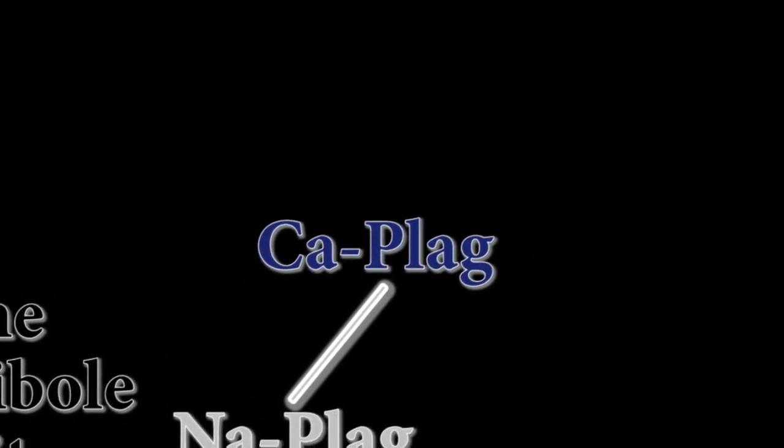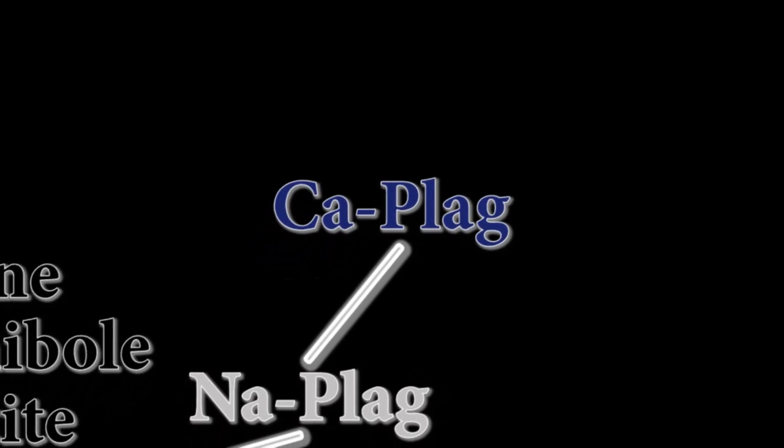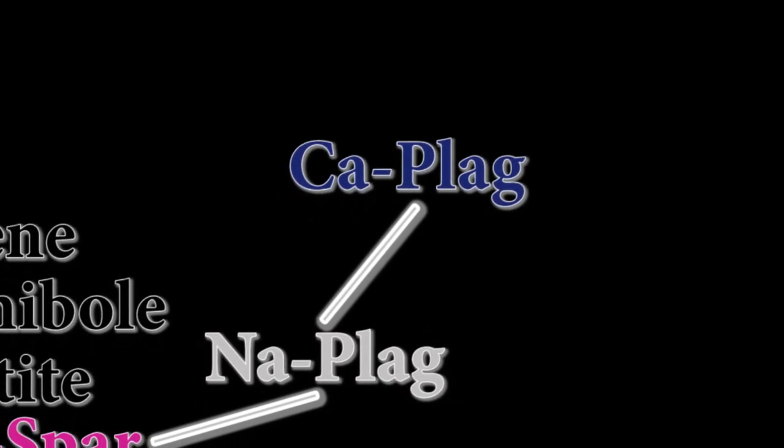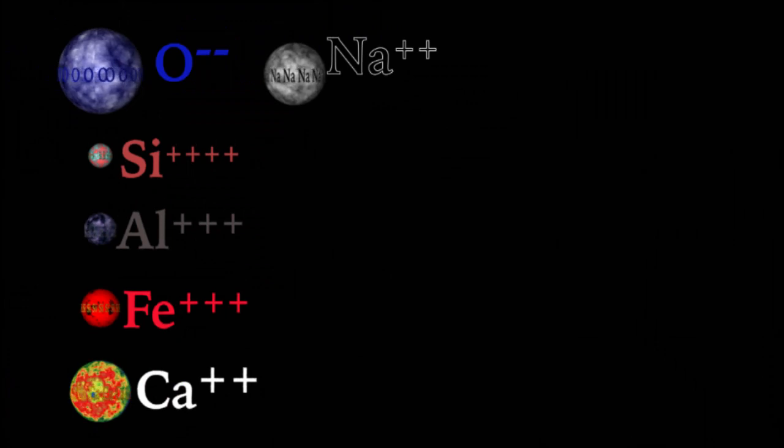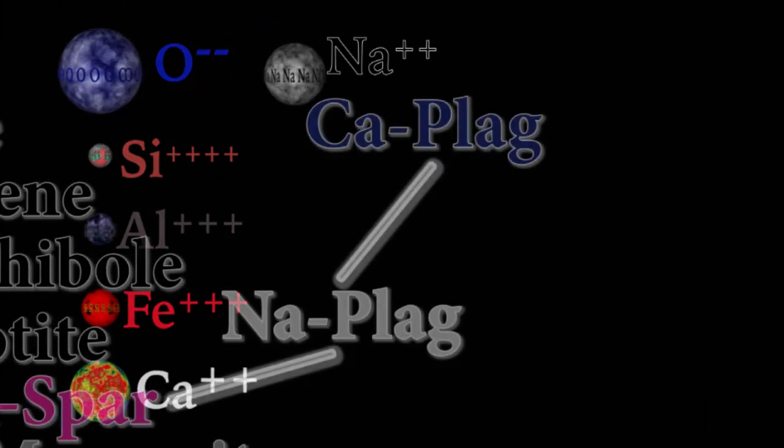The right side of this chart is called the continuous series, and describes a solid solution for plagioclase feldspar going from calcium rich to sodium rich. Calcium and sodium have similar ionic charge and radius, and thus can swap out for each other in this solid solution.